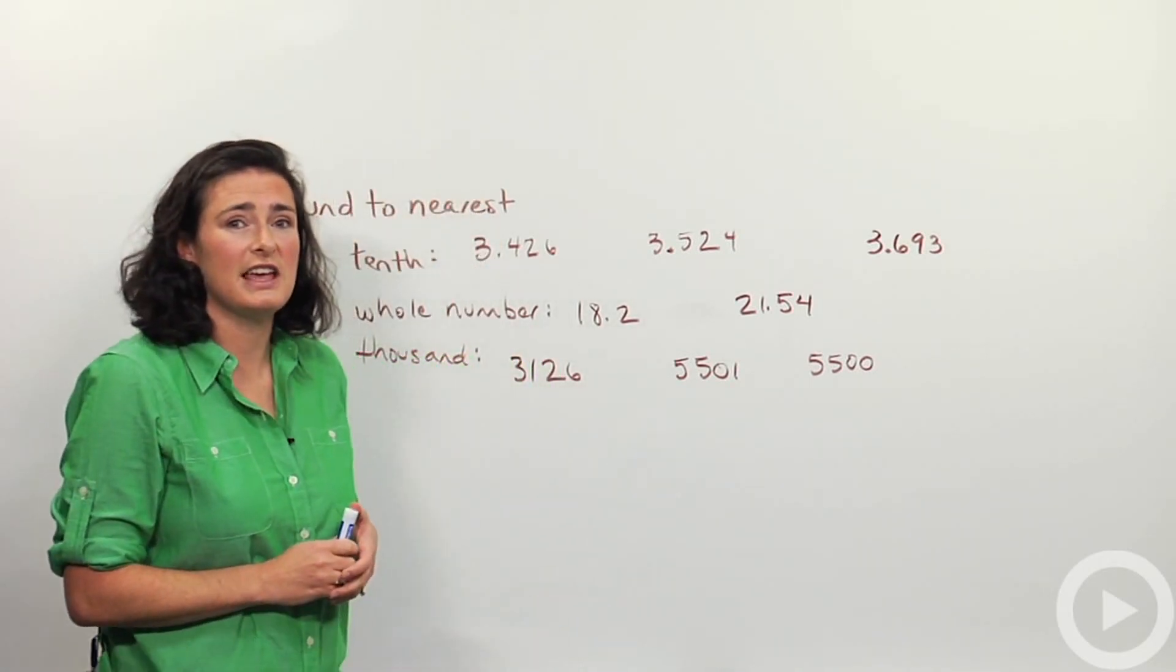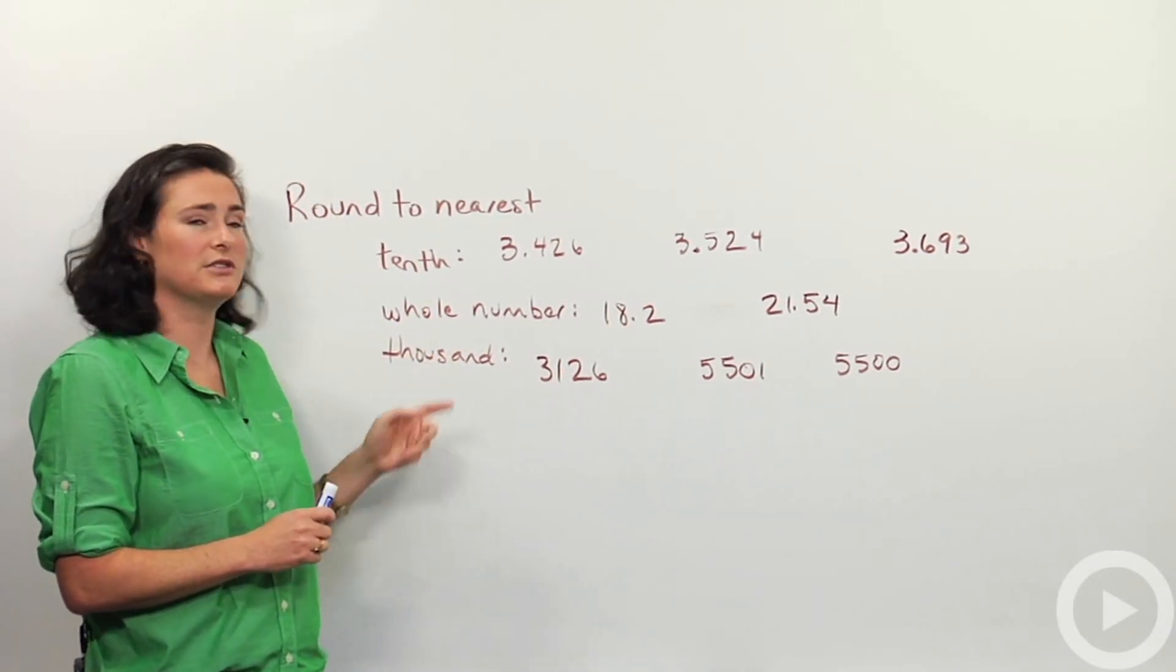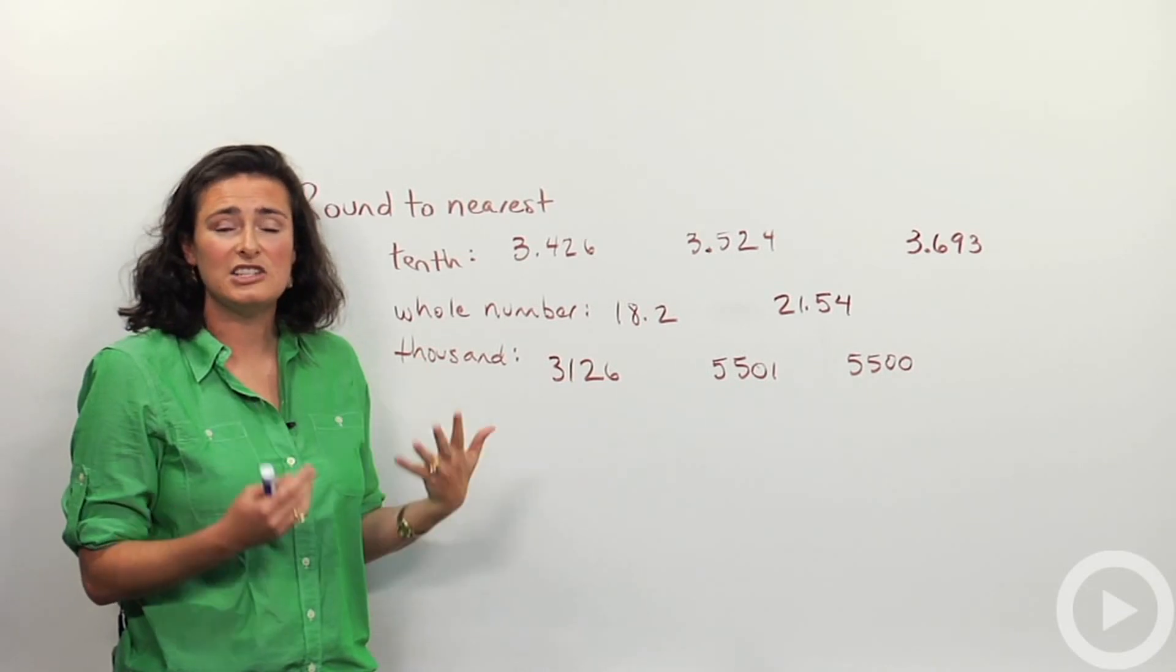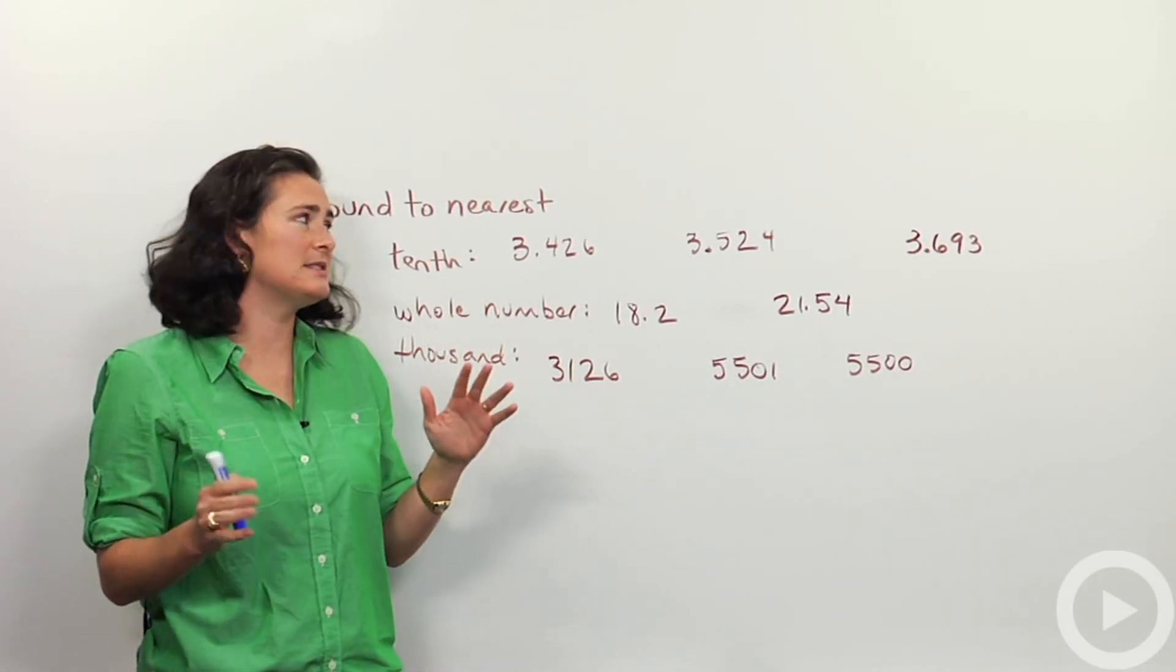First, the directions here say round to the nearest tenth, then round to the nearest whole number, and then round to the nearest thousand. So in addition to instructions telling you to round or approximate, it'll tell you how specific to be.